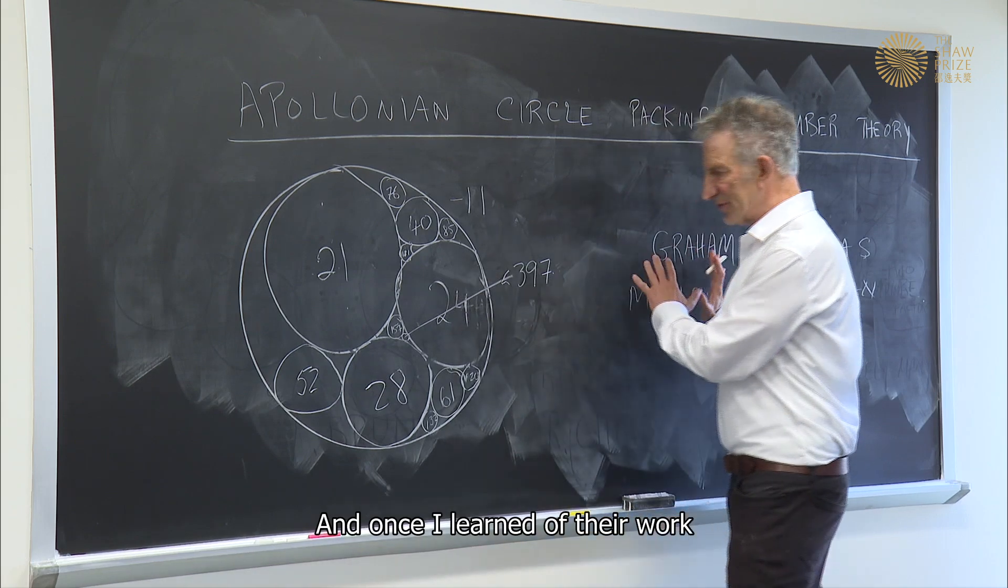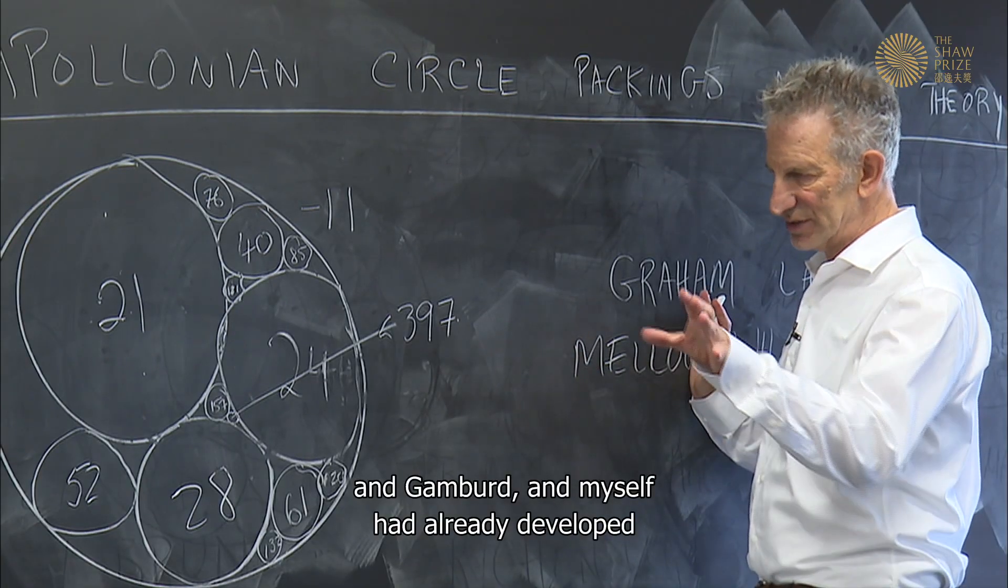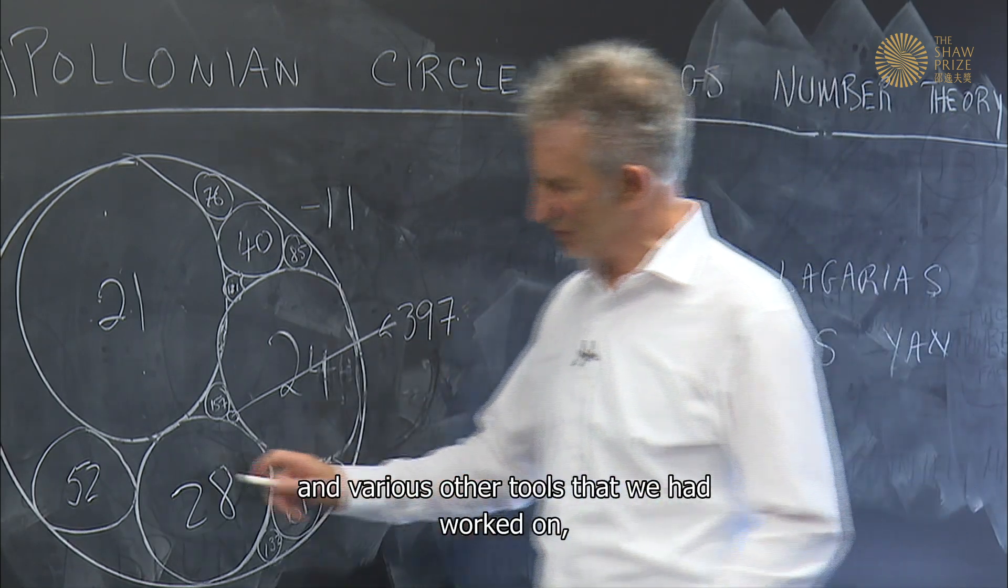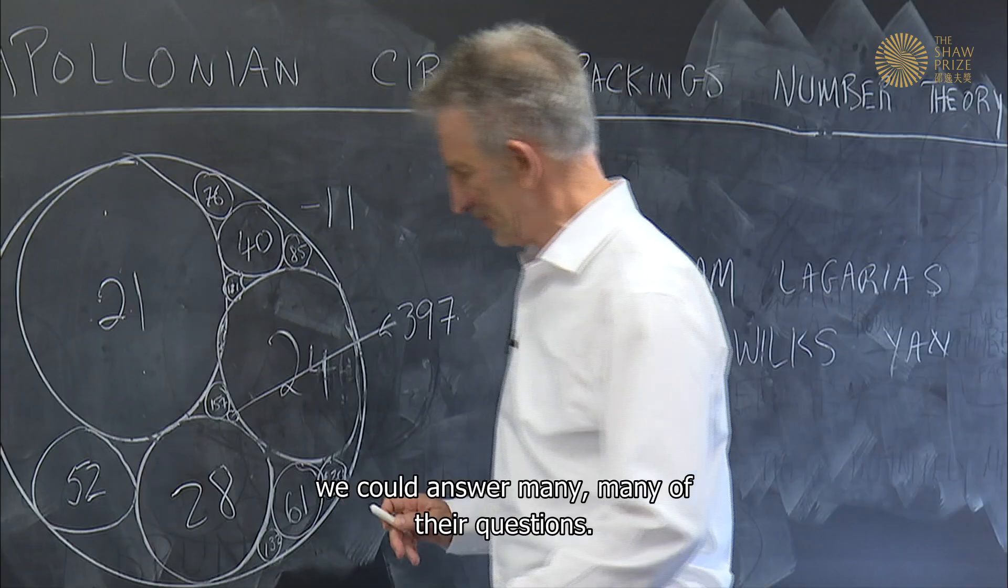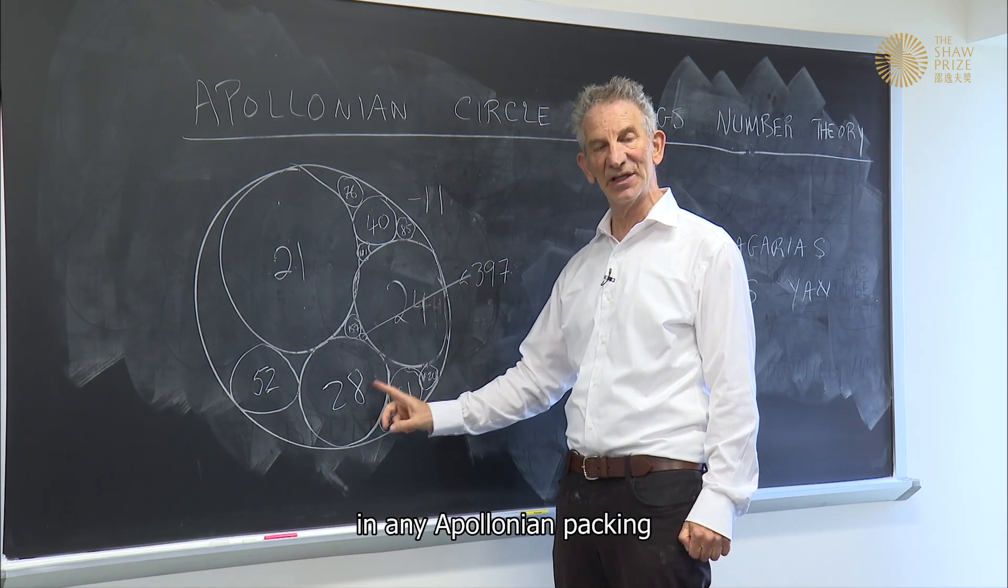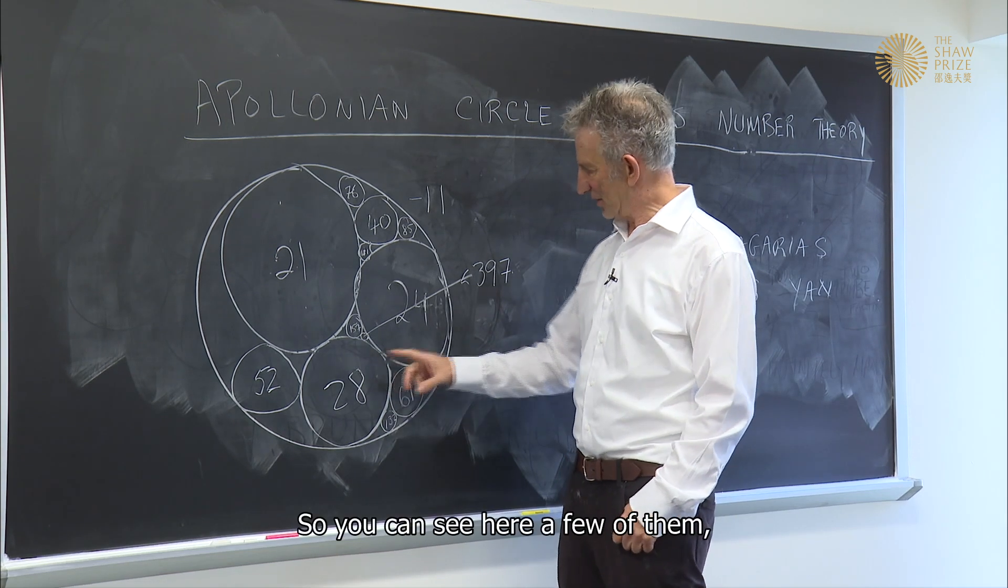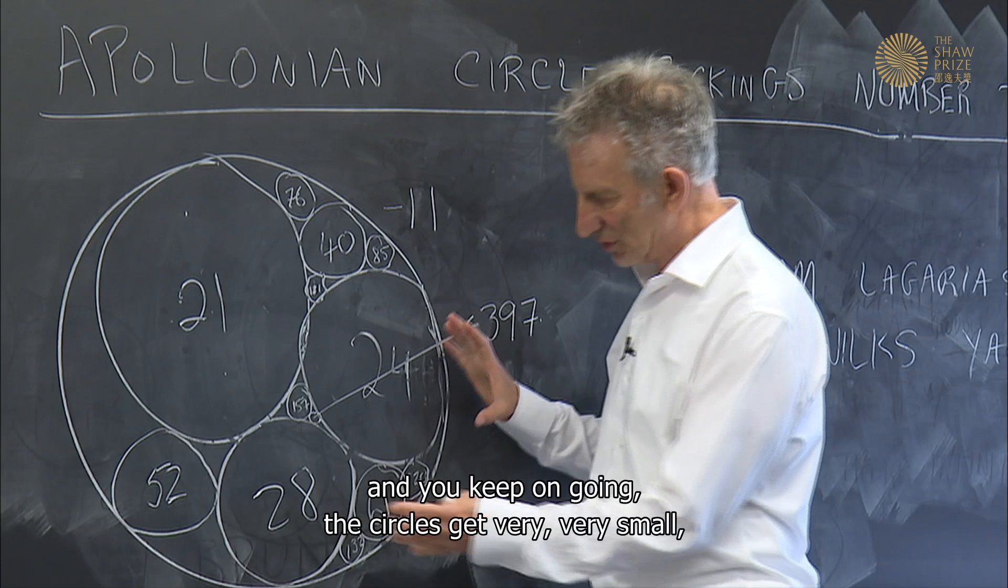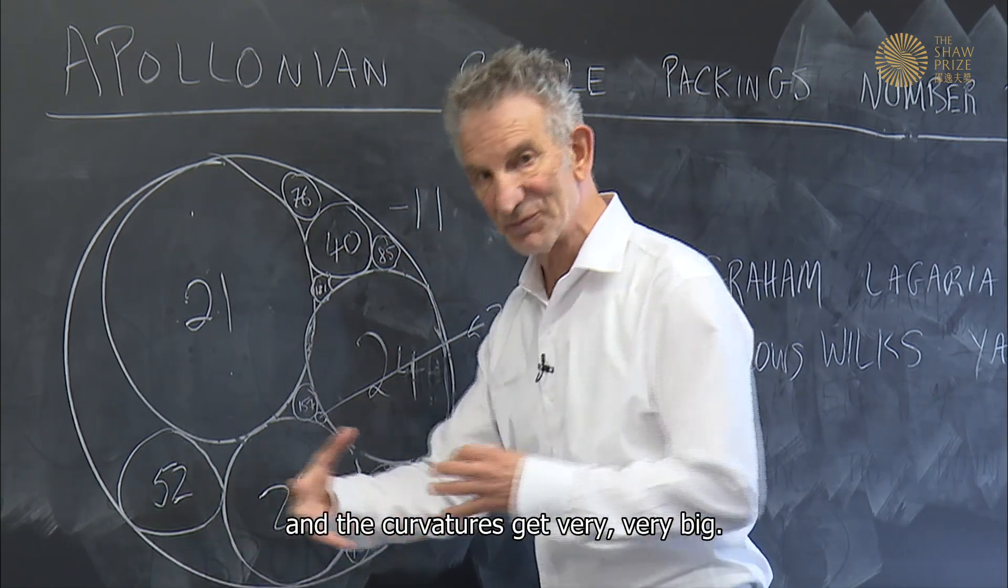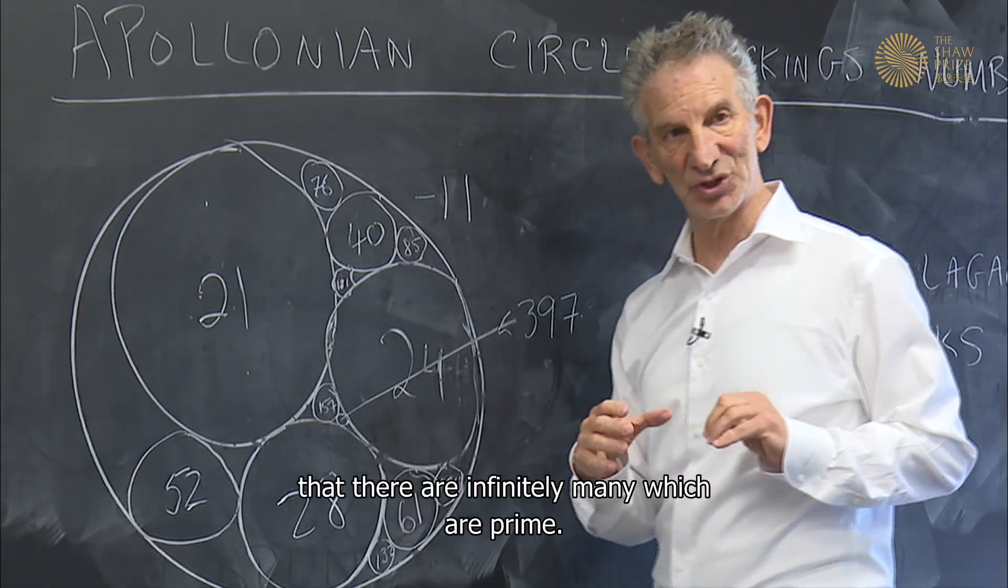And once I learned of their work, Bourgain and myself had already developed the rudiments of the affine sieve, and various other tools that we had worked on, we could answer many of their questions. And I was able to prove there are infinitely many circles in any Apollonian packing which are prime numbers. So you can see here a few of them, and you keep on going, the circles get very, very small, and the curvatures get very, very big. And you will find, it's a theorem, that there are infinitely many which are prime.